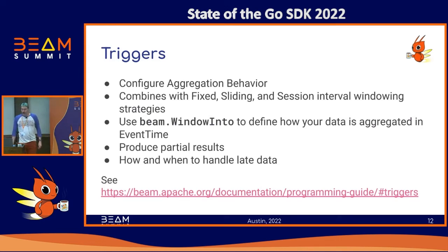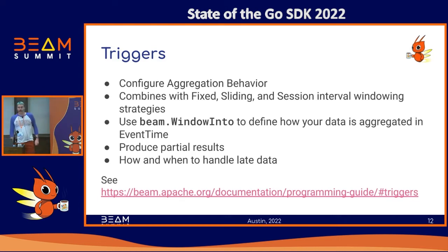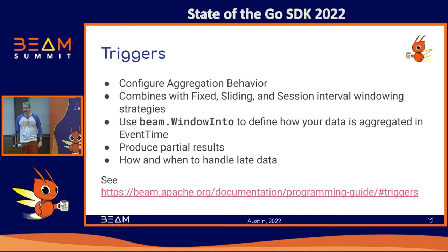Triggers are one of those just-past-the-basics features of Beam. They let you configure and fine-tune aggregation behavior. If windows are the summary for aggregation, triggers are kind of the details — they let you get early looks at what your data is doing, get early and partial sums, and tune what you want to do with late data. Certainly as of 2.33 and later, we have support for a very robust set of triggers. You can thank Ritesh for that.